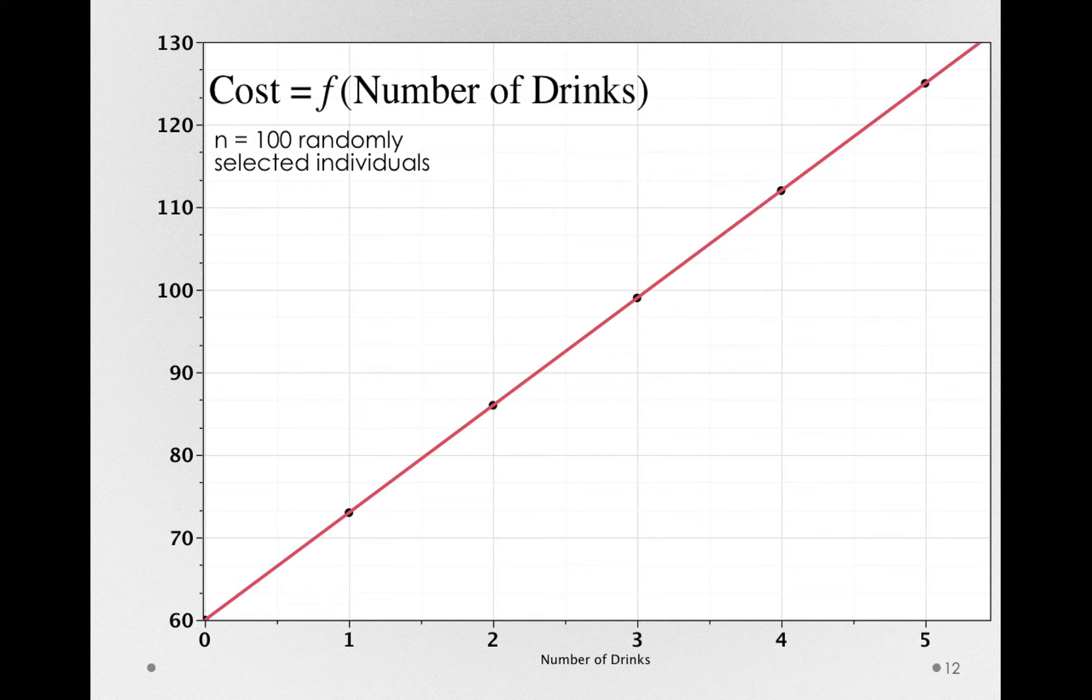Now in this case, we were discussing a functional relationship, a relationship where we actually knew the function that related number of drinks on the x-axis to the cost an individual paid. And in this situation, we had no error. That is, individuals who bought the same number of drinks, let's say one drink, paid identical amounts at this club.